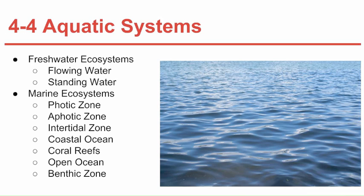You'll often see organisms with suckers that can hang on to rocks so they can survive in the river. Standing water ecosystems are found in lakes and ponds. They usually have water circulation — a river flowing in and maybe a river flowing out — which helps circulate the water, since most organisms cannot survive stagnant water.